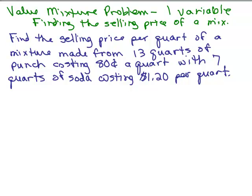This is a value mixture problem that I'm going to solve using one variable because we're looking for one thing, the selling price of a mixture. Here's the problem: Find the selling price per quart of a mixture made from 13 quarts of punch costing 80 cents a quart with 7 quarts of soda costing $1.20 per quart.